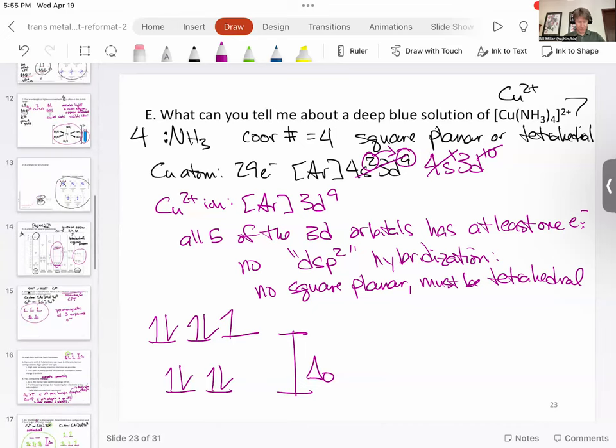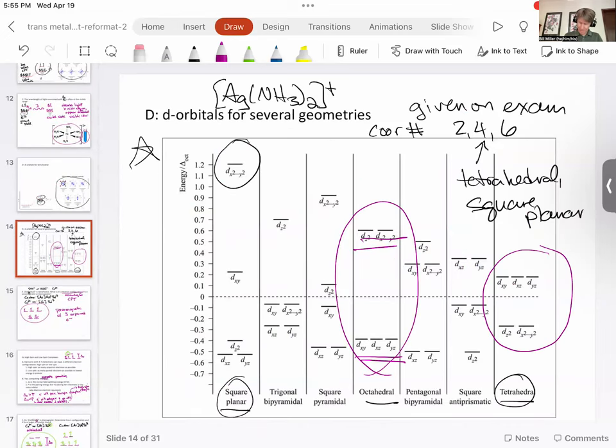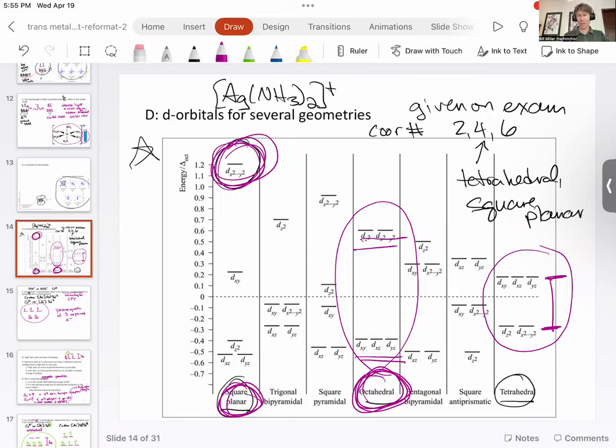And we didn't talk too much about this, but you can see that the spacing right here is relatively small. That's called how much splitting occurs. What we're saying is the stronger the ligands, the farther apart those two sets of orbitals are. You can also see that octahedral starts much farther apart, and square planar, one of these orbitals is way up there.